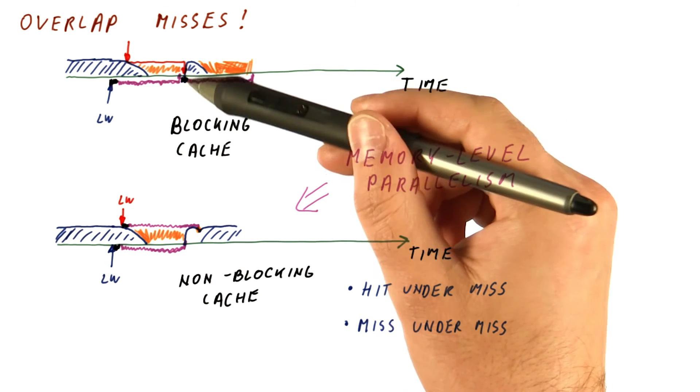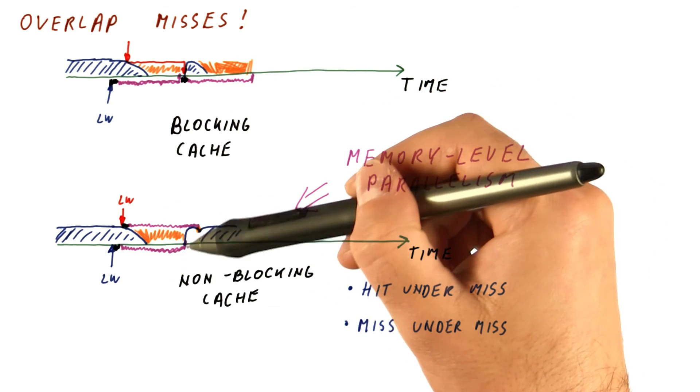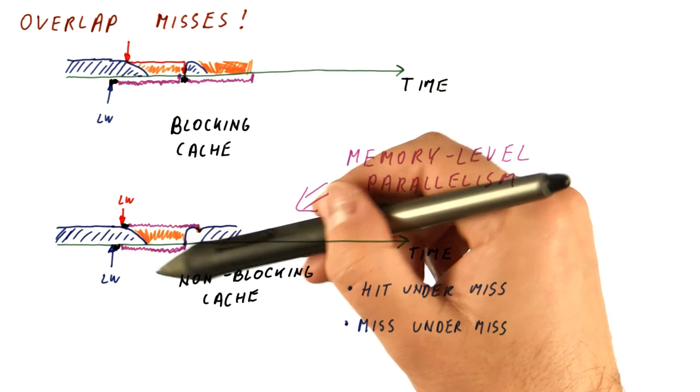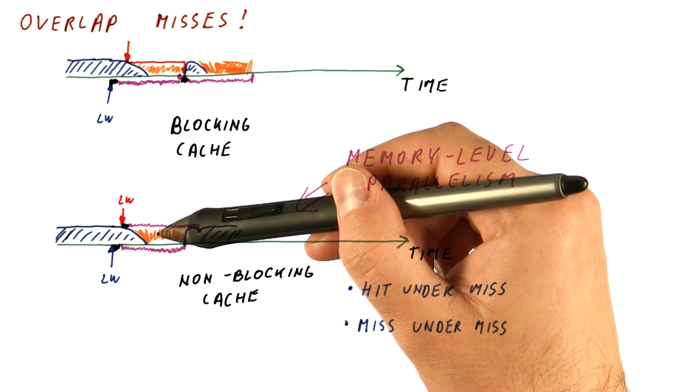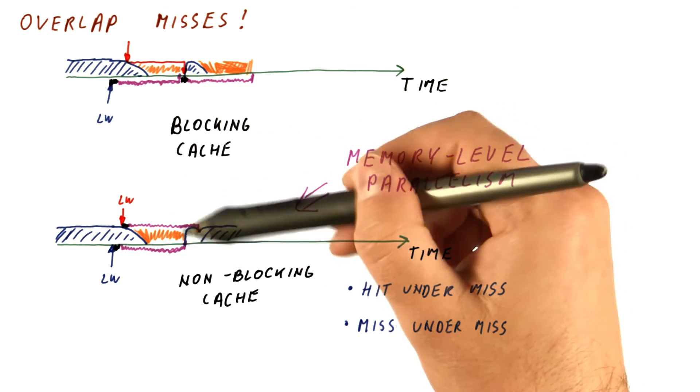Instead of seeing the full miss latency being added to the memory access time, we are really seeing that the penalties of the two misses overlap. So really we pay the penalty once and we get one, two, or even fifteen misses in exchange.